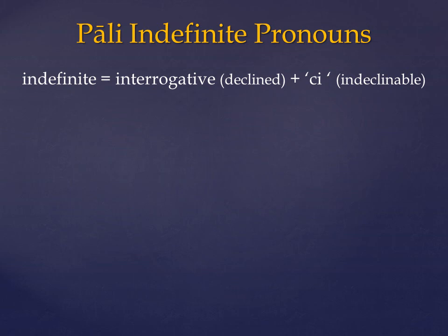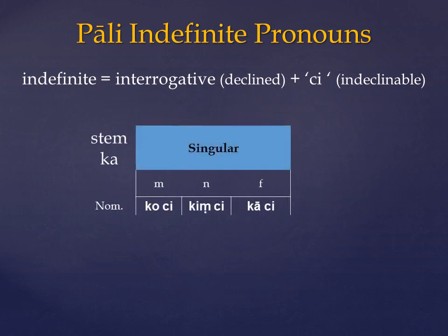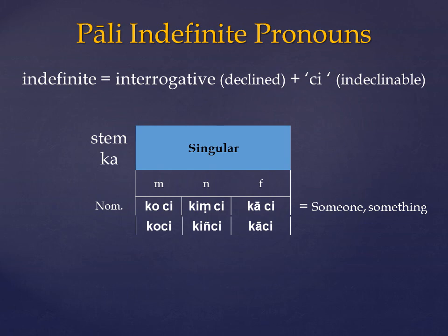So the interrogative pronoun is based on the stem CA. And if the particle CI follows an interrogative pronoun, that makes it indefinite. In practice, the particle CI is nearly always joined with the pronoun itself, so we get COCI, KINCI, CARCI. The important thing to understand here is that the interrogative pronoun declines according to the function that it's playing in the sentence, and the particle CI is added to the end of that and is itself indeclinable.